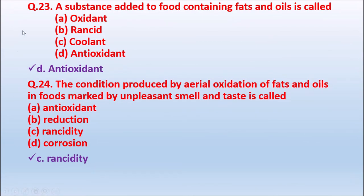Question 23: A substance added to food containing fats and oils is called — oxidant; rancid; coolant; or antioxidant. Antioxidant is added to food containing fats and oils to prevent rancidity. The correct answer is antioxidant.